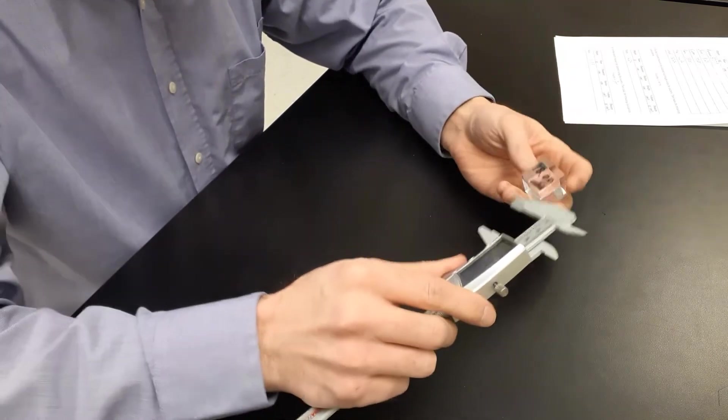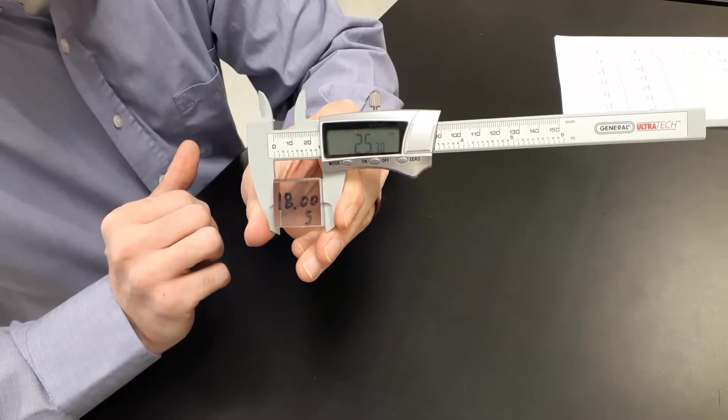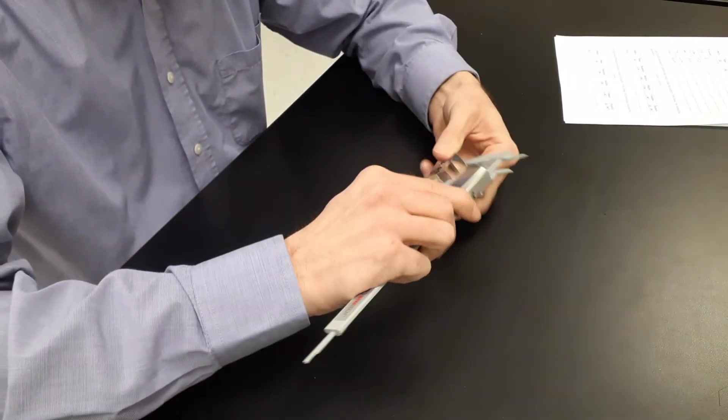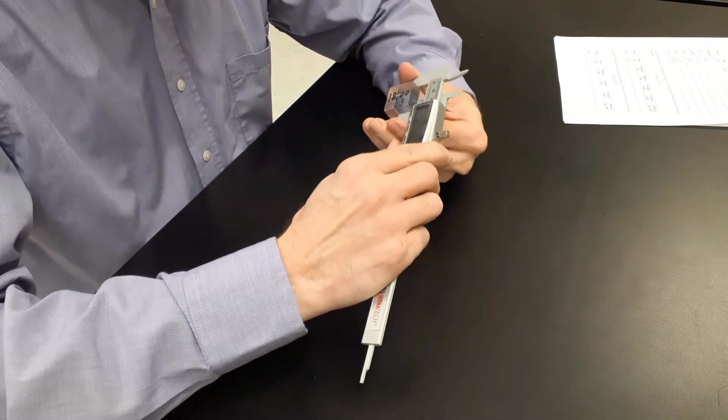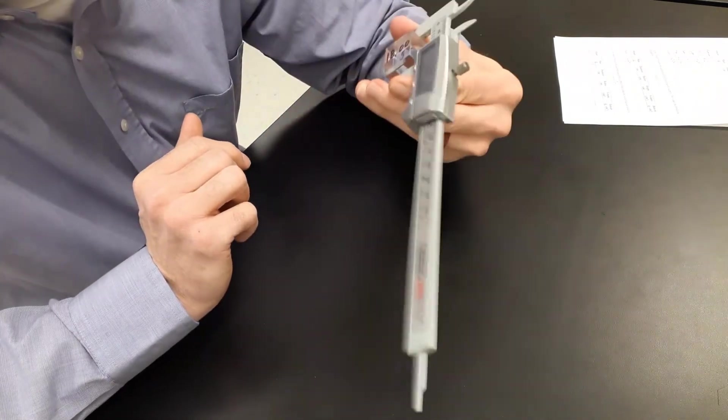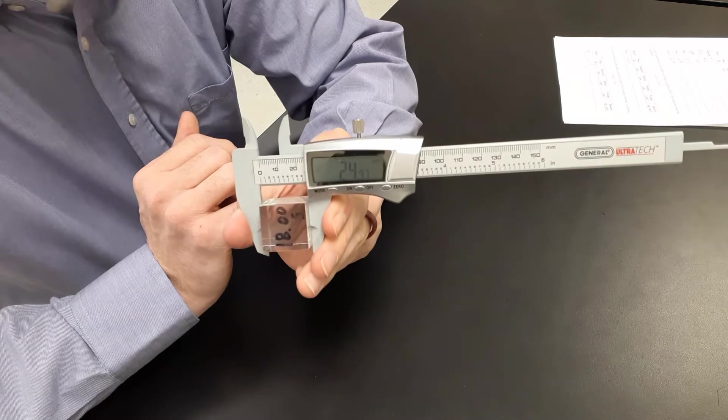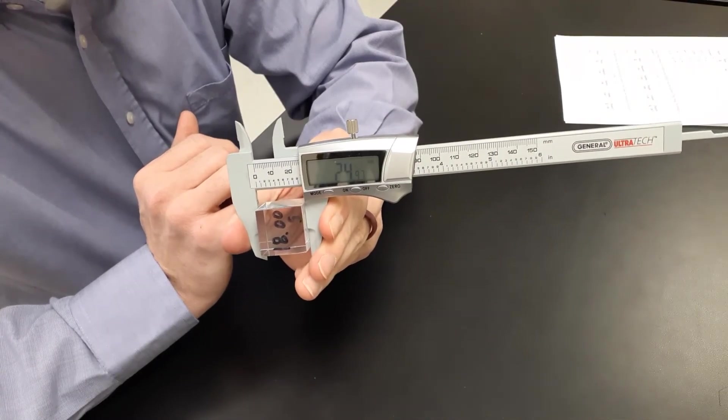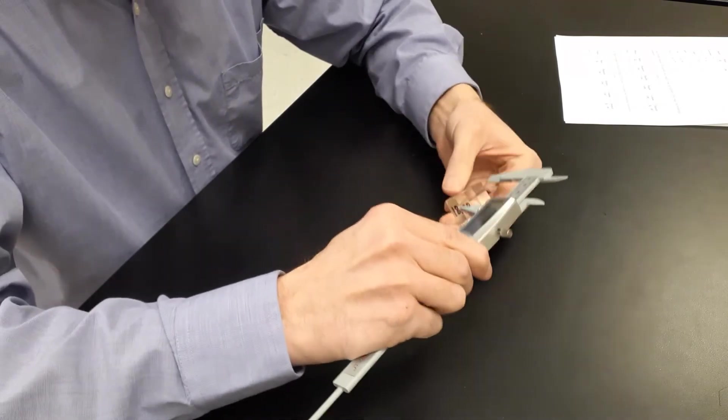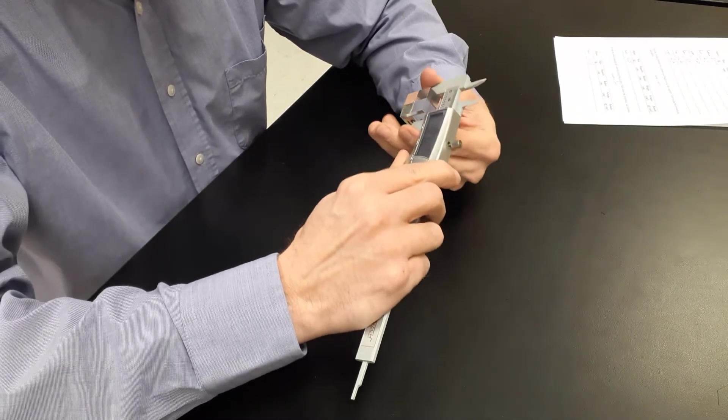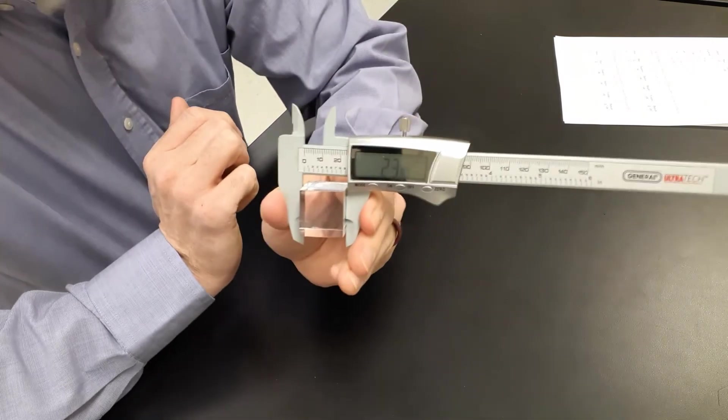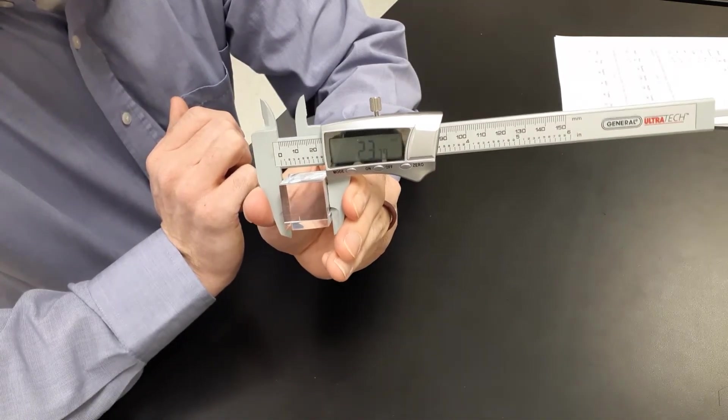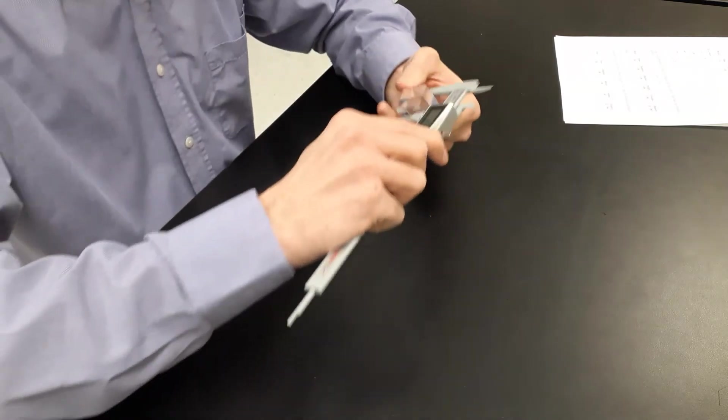Now I'm going to take the plastic block. First measurement, 25.27 millimeters. Next measurement, I might double check myself here, 24.96 millimeters. And then one last measurement, 23.80 millimeters.